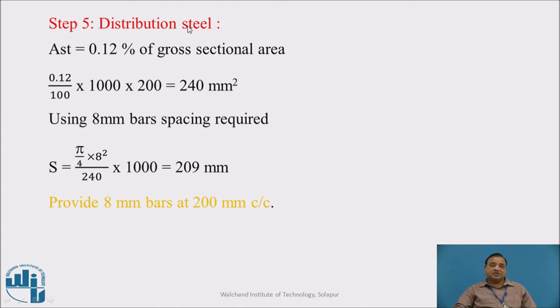Step 5: Distribution steel. This is perpendicular to the main steel. AST is 0.12% of gross sectional area: 0.12 by 100 times 1000 times 200 equals 240 mm square. Using 8mm bars, spacing required is area of 1 bar divided by 240 times 1000, which is 209mm. Provide 8mm bars at 200mm center to center. This is distribution steel.